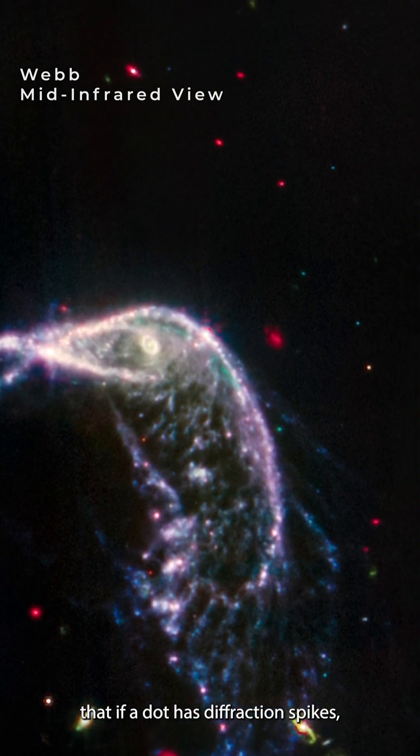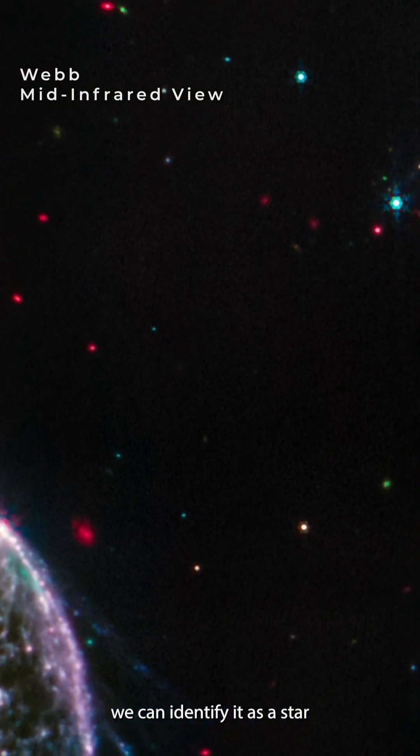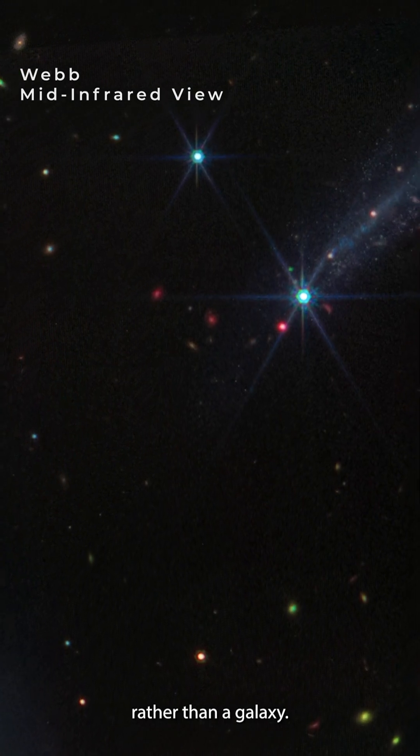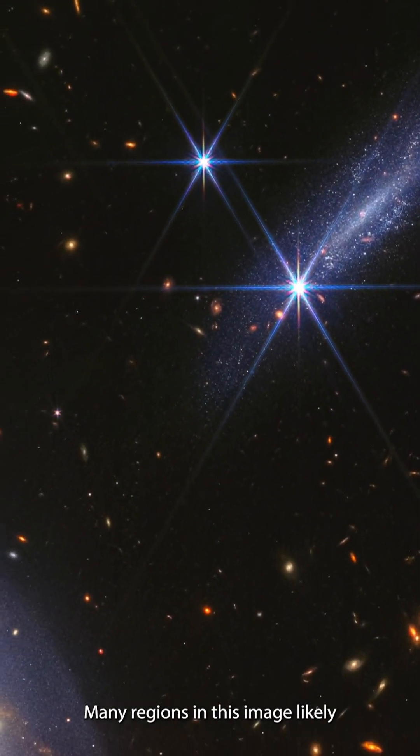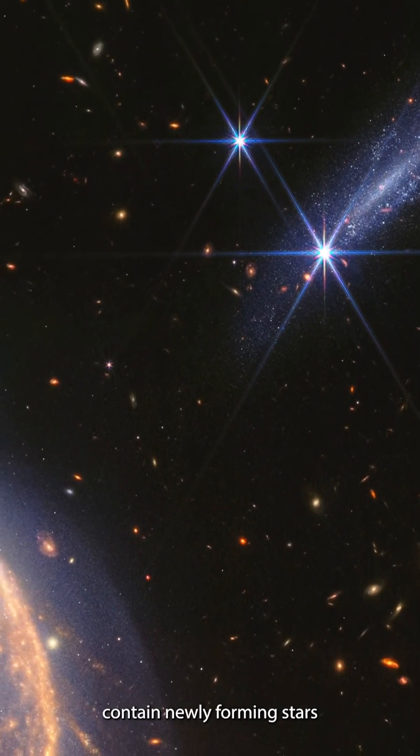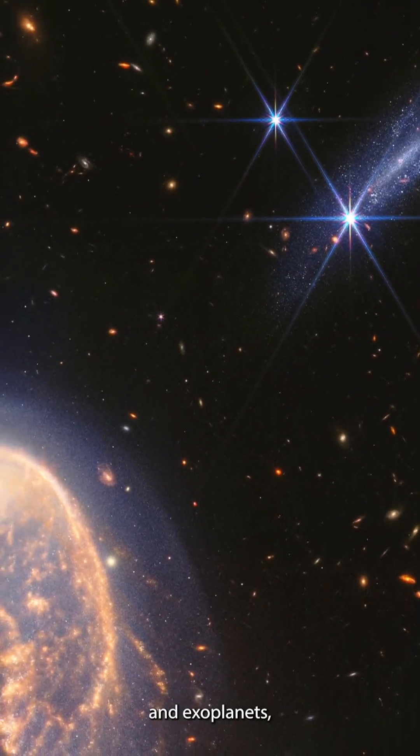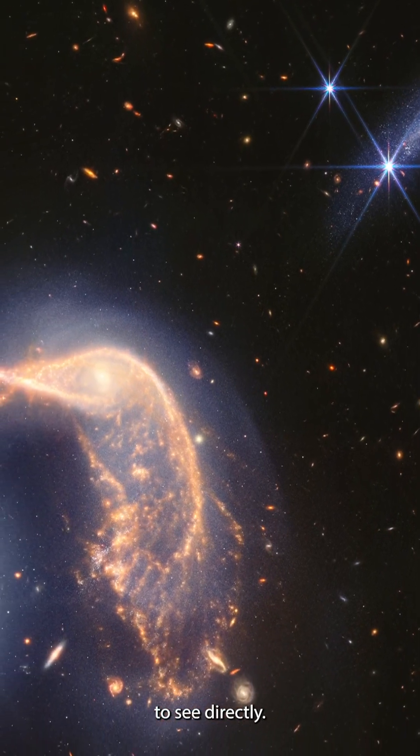Notice that if a dot has diffraction spikes, we can identify it as a star rather than a galaxy. There are more wonders present than we can see. Many regions in this image likely contain newly forming stars and exoplanets, though they are too far away to see directly.